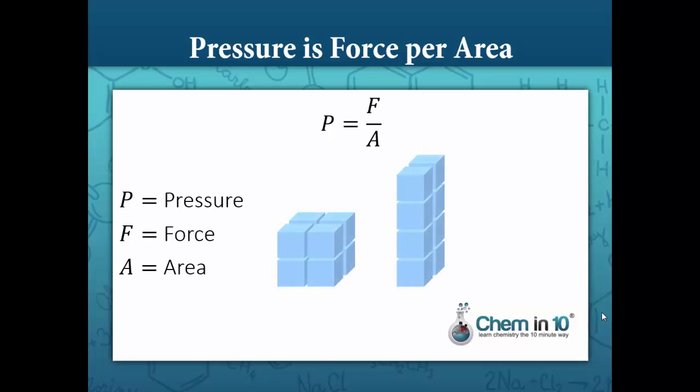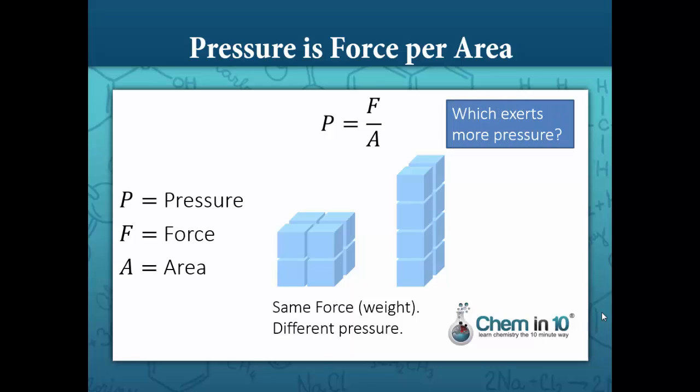When we look at these two rectangular prisms, we notice that they have the same force because they have the same weight, but they exert a different pressure. Which exerts more pressure? The one that exerts more pressure has the same force but less area. So the one on the right exerts a greater pressure.